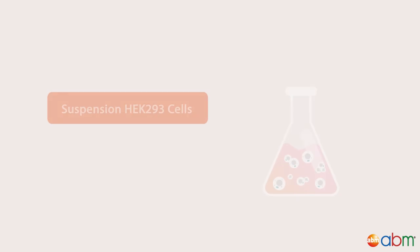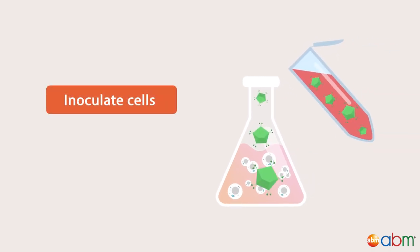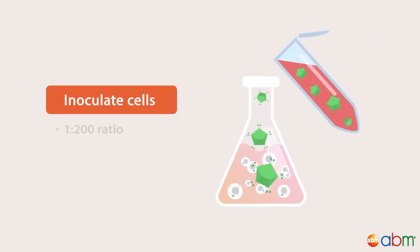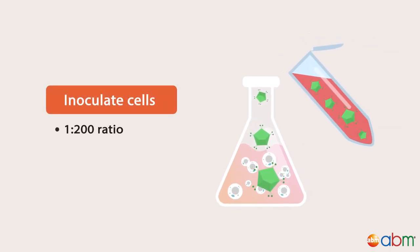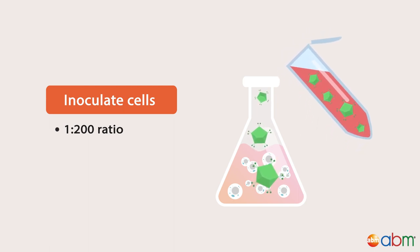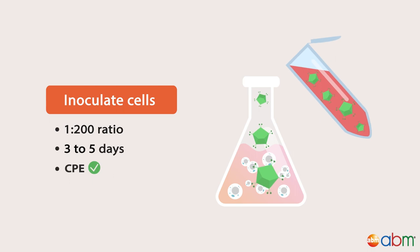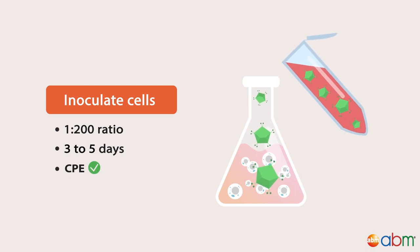If you are using suspension cells, prepare 100 ml of cells at a density of 1.5 million per ml one day before seedstock inoculation. Inoculate suspension cells at a ratio of 1 to 200 — for example, 0.5 ml of virus per 100 ml of cells — and wait 3 to 5 days for CPE to complete.